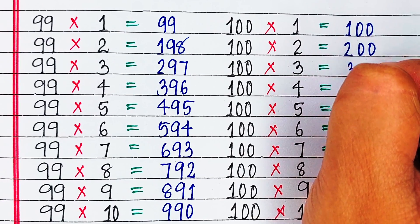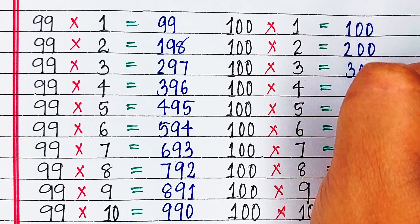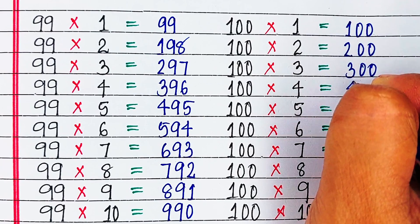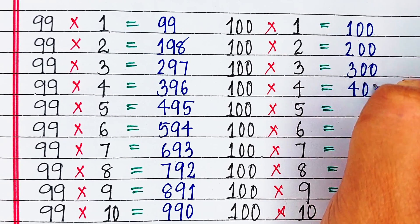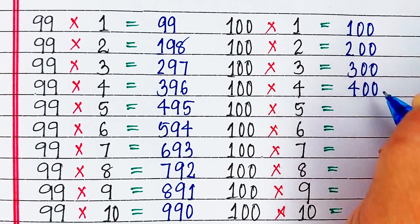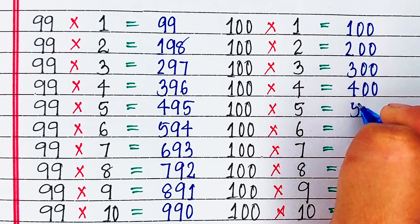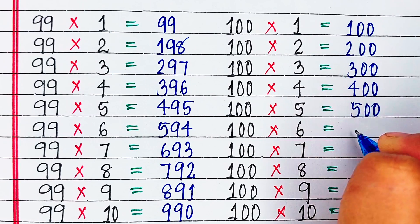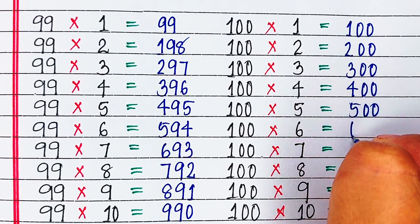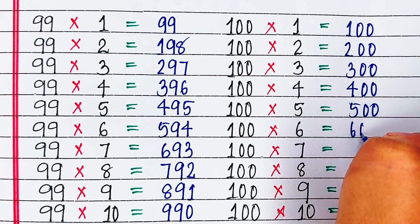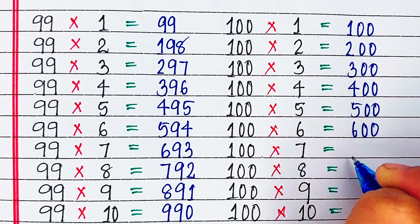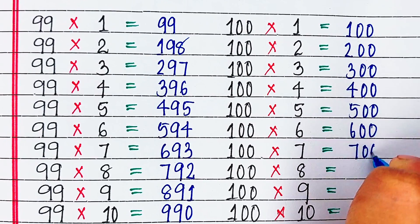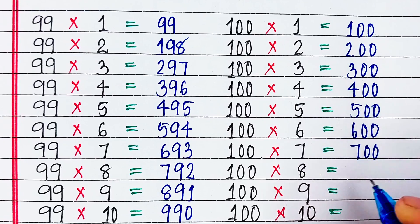Finally, the table of hundred. Hundred ones are hundred. Hundred twos are two hundred. Hundred threes are three hundred. Hundred fours are four hundred. Hundred fives are five hundred.